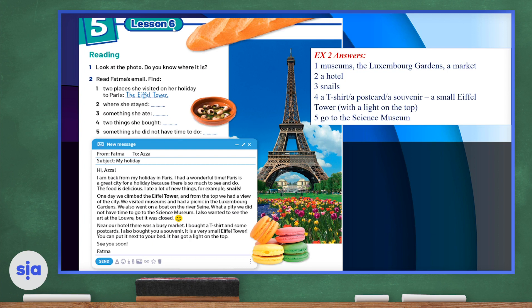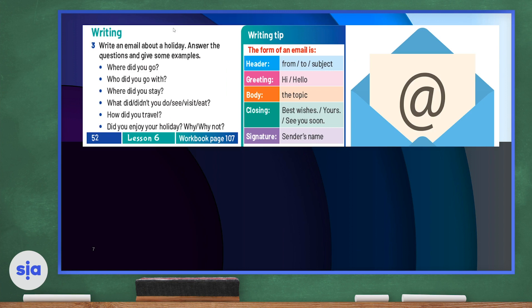Let's jump to our writing section. Write an email about a holiday. Answer the questions and give some examples. Where did you go? Who did you go with? Where did you stay? What did or didn't you do or see or visit or eat? And how did you travel? And did you enjoy your holiday? Why or why not?